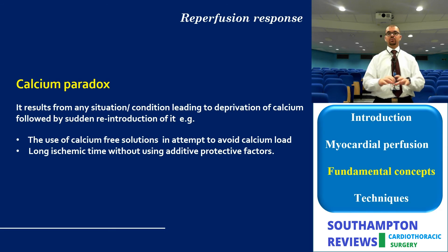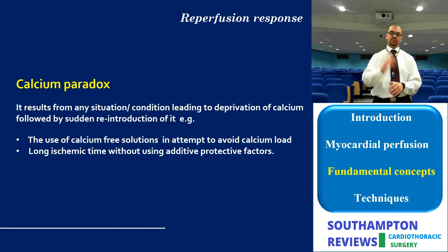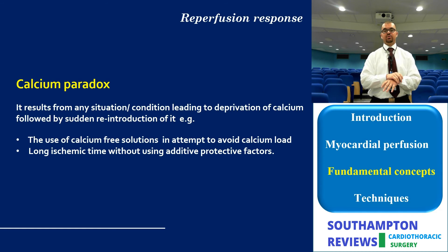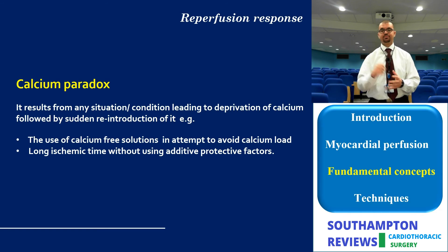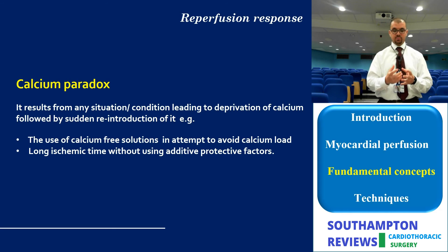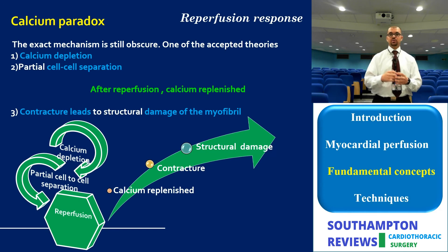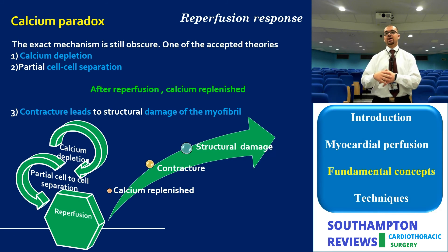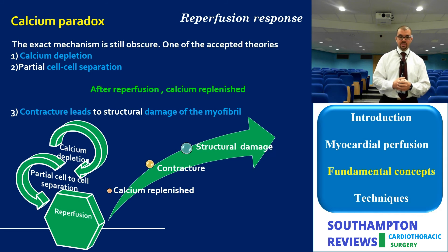The other side of the calcium homeostasis spectrum is the calcium paradox. After discovering that calcium was harmful, initial attempts involved using cardioplegia without any calcium at all — but this had an even worse effect, called the calcium paradox. If during ischemia you completely deprive the heart of calcium, a paradoxical phenomenon occurs upon reperfusion. One accepted theory is that calcium depletion leads to partial cell-to-cell separation, and upon reperfusion, calcium replenishes and causes profound contraction on the basis of partially separated myocytes, leading to structural damage — happening during reperfusion.